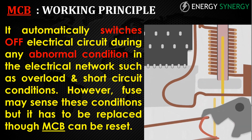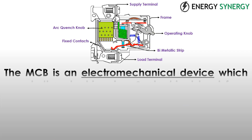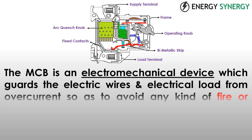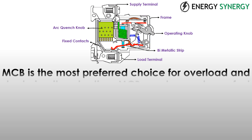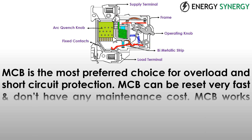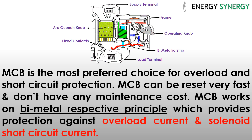A fuse may sense these conditions but it has to be replaced, whereas MCB can be reset. The MCB is an electromechanical device which guards electric wires and electrical loads from overcurrent so as to avoid any kind of fire or electrical hazards. Handling MCB is quite safer and it quickly restores the supply. For house applications, MCB is the most preferred choice for overload and short circuit protection, and can be reset very fast with no maintenance cost.